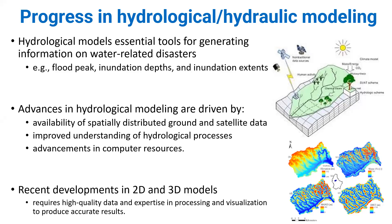Let's look at progress in hydrological and hydraulic modelling. As you can see on the screen, hydrological models are essential tools for generating information on water-related disasters — for example, flood peaks, inundation depth, and flood extents. Advances in hydrological modelling driven by spatially distributed ground and satellite data improve our understanding of hydrological processes. Recent advancements in computing resources, such as high-performance computers and big data analysis, also help us understand hydrological models better.